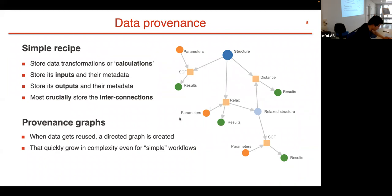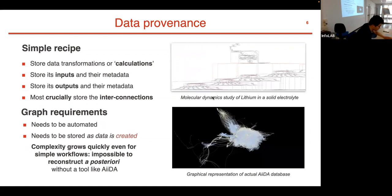This network will grow quickly in complexity even for simple workflows. For example, for this molecular dynamics study of lithium in solid electrolyte, it might be simple when you start, but actually if you want to fully reproduce all your calculations, you have to store a rather complex network. Even for larger databases with thousands of calculations, you'll see the AiiDA provenance is quite complex. For the network of this scale, it's very difficult for the human brain to remember everything, so that's why we need a tool like AiiDA to fully generate the provenance graph.